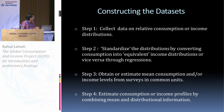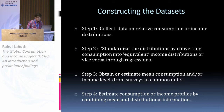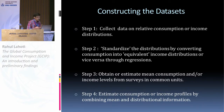Coming to the construction of the dataset, we have four steps. The first step is we collect data on relative consumption or income distributions. The second is we standardize the distributions — we convert consumption distributions into equivalent income distributions and vice versa. In the third step, we obtain an estimate of mean consumption from the surveys, because we are interested both in the levels as well as the distribution. In the fourth step, using these two, we create a consumption and income profile.